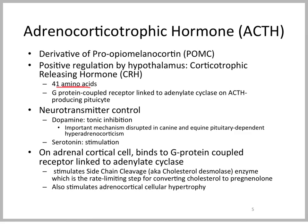Neurotransmitter control of ACTH is important clinically: there is tonic inhibition by dopamine. In conditions such as pituitary-dependent hyperadrenocorticism in the dog and horse — where there is dysregulation somewhere between the hypothalamus and pituitary — there is evidence, particularly in the horse, that dopamine may be deficient. By reducing dopamine, you lose that inhibition and ACTH increases. Serotonin can also stimulate ACTH.